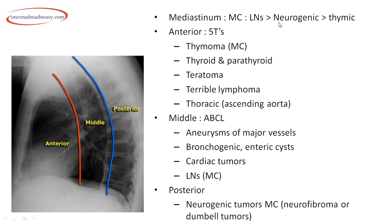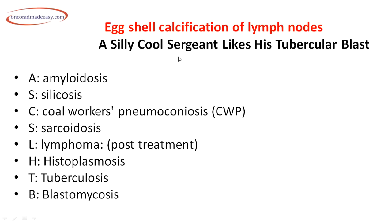The most common mediastinal pathology is lymph nodes, followed by neurogenic tumors, then thymic tumors. The mediastinum is divided into anterior, middle, and posterior. Anterior mediastinal masses: the mnemonic is five T's — Thymoma (most common), Thyroid and parathyroid, Teratoma, Terrible lymphoma, and Thoracic/ascending aortic aneurysm. Middle mediastinum mnemonic is ABCL: Aneurysm of major vessels, Bronchogenic or enteric cysts, Cardiac tumors, Lymph nodes.